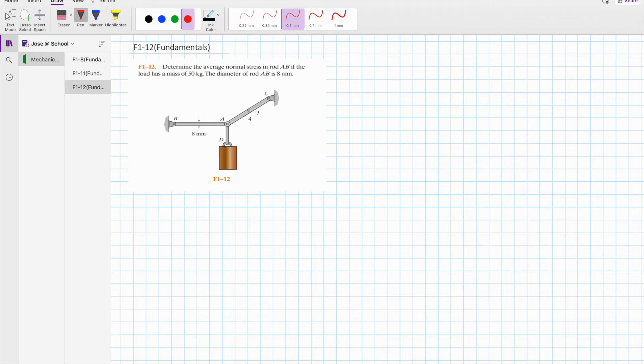In this video, we're going to focus on the total fundamental problem from chapter 1. We are asked to determine the average normal stress in rod AB if the load has a mass of 50 kg. The diameter of rod AB is 8 mm.